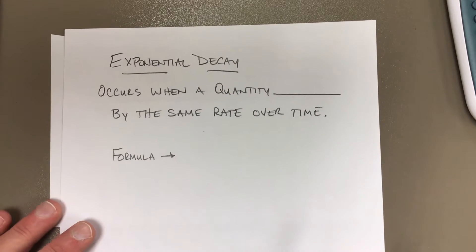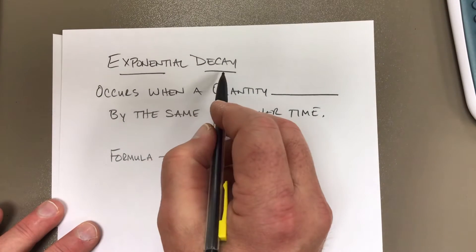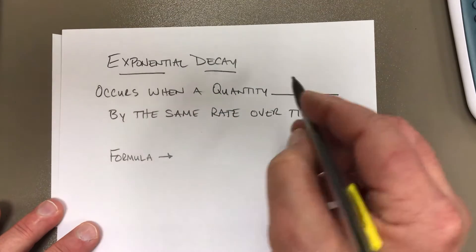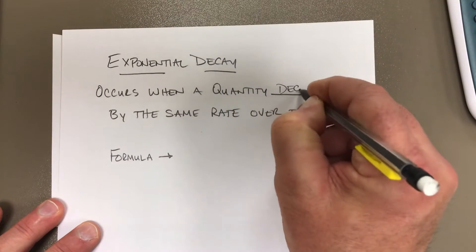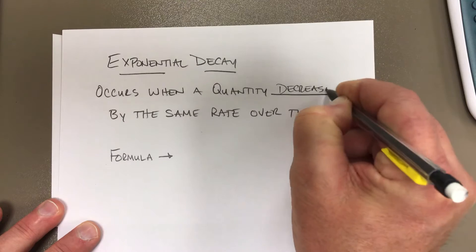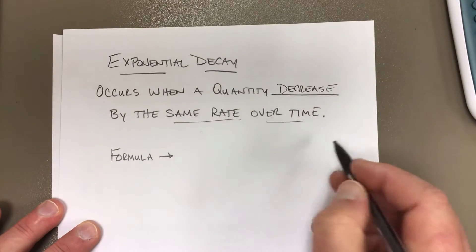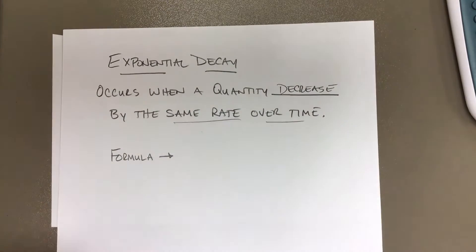Hey there, Mr. Withereau here. Okay, exponential decay. This happens when the quantity decreases over a period of time at a constant rate. So when we see something being decreased by a constant rate over a period of time, then we say that it's exponential decay.